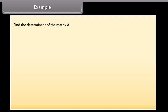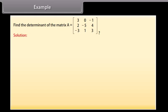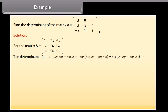Example: find the determinant of the matrix A with first row 3, 0, minus 1; second row 2, minus 5, 4; third row minus 3, 1, 3. Solution: using the general 3×3 formula, the determinant of A equals A11 times (A22·A33 minus A23·A32) minus A12 times (A21·A33 minus A23·A31) plus A13 times (A21·A32 minus A22·A31). Substituting the given values to compute the result.